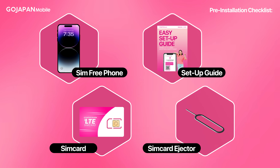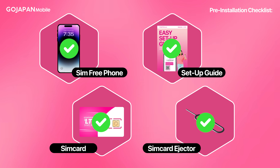To properly set up your APN, you must have the following: an open-line SIM-free mobile phone, GoJapan SIM card, GoJapan guidebook for tutorials, and a SIM card ejector.